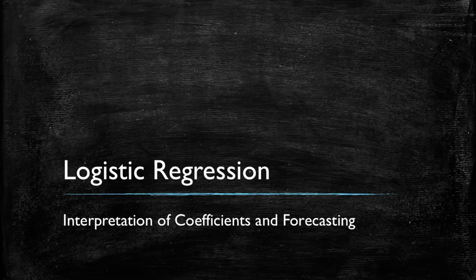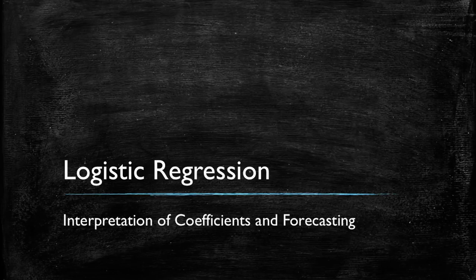Welcome to this video on logistic regression. In this video, we will talk about how do we interpret the coefficients of a logistic regression, and we will also talk about how do we estimate or forecast the likelihood of the dependent variable being a 1 — the probability that it is a 1 — given a set of values for the independent variables.